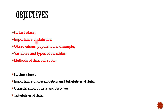In the last class we covered the importance of statistics, what observation, population, and sample are, variables and types of variables, and methods of data collection such as survey, experiment, and observation. In this class we will have information on the importance of classification and tabulation of data, classification of data and its types, and ultimately tabulation of data.